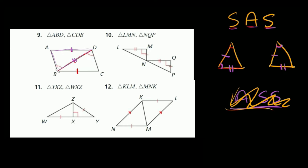No, we don't. Just looking at the top triangle, we have a side, a side, a side — and the angle given is not in between the two sides. So what we have is angle side side, and that doesn't work. If the angle were over here, then we'd have side angle side and it would work. So number 9: we cannot prove these two triangles are congruent using side angle side.